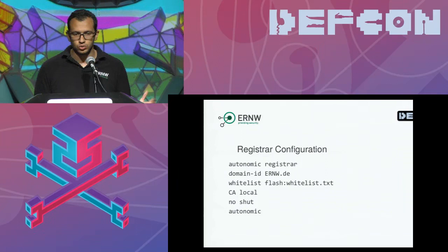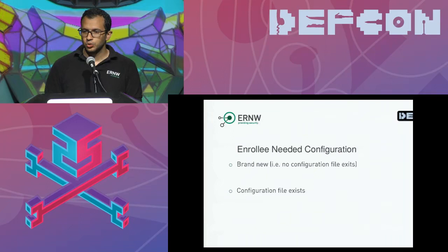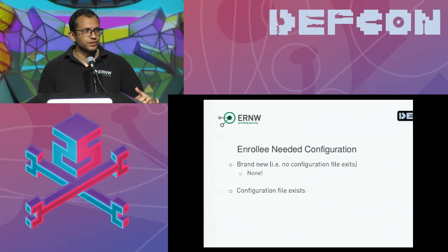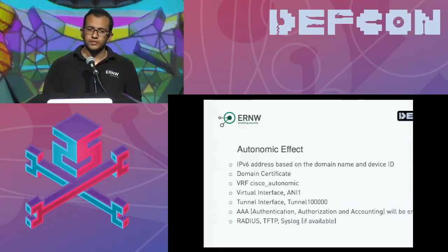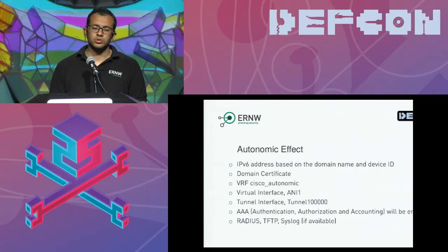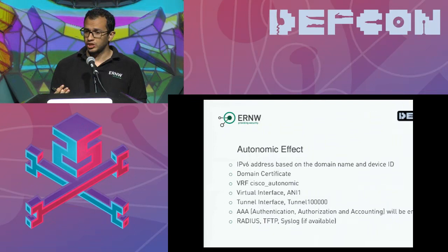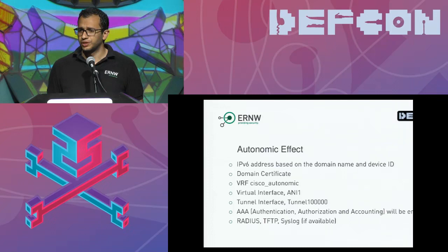For other devices: if brand new, no commands needed. If it has a previous configuration, just one command — 'autonomic' — to start autonomic services. Basic configuration includes three to four interfaces configured with an IPv6 address based on your domain name, a generated key, a VRF created on your machine, and AAA enabled. If you have a syslog or TFTP server in your network, it will be discovered automatically via MDNS — no configuration needed.